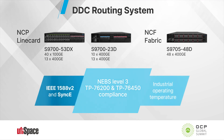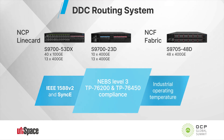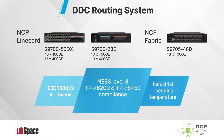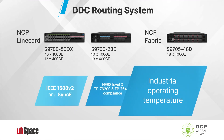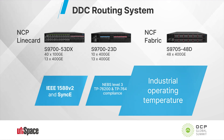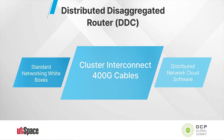We support the 1588 version 2 transparent clock. These devices also operate on industrial temperature from zero degrees Celsius to 45 degrees Celsius. The white boxes are connected with 400 gig optical cables. Let's hear from Credo how their innovation reduced power consumption of their cables and therefore that of the entire router.